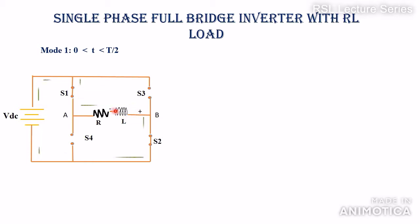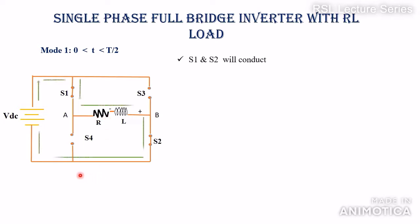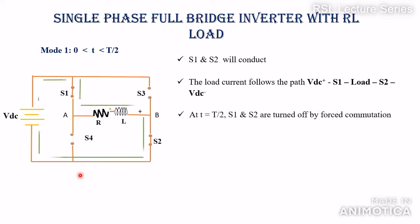There will be a voltage drop across the inductor with the polarity as shown in the figure. Terminal A is directly connected through switch S1 to the positive terminal of the supply voltage, and terminal B is connected through S2 to the negative terminal. So the load voltage V0 equals +VDC. At the end of this mode at t = T/2, S1 and S2 will be turned off due to forced commutation.